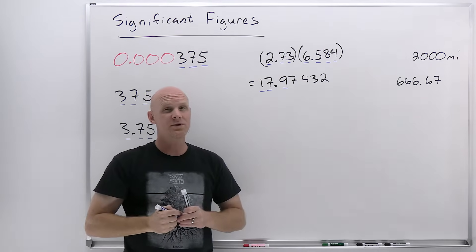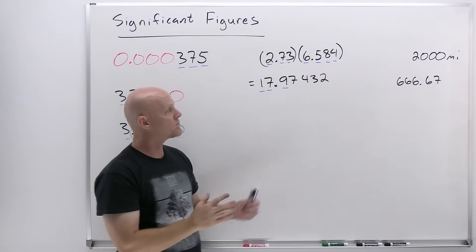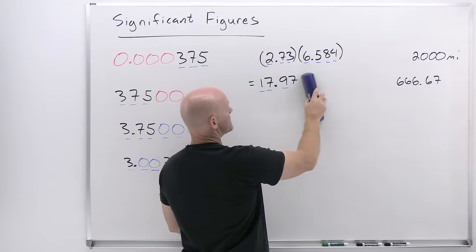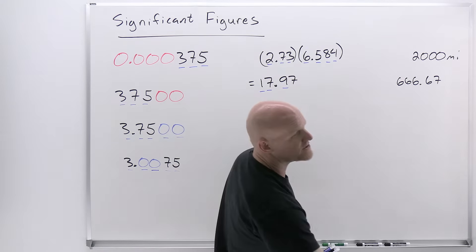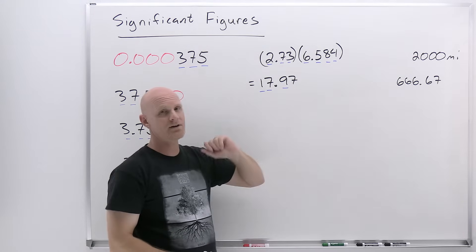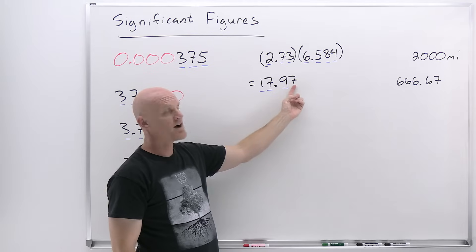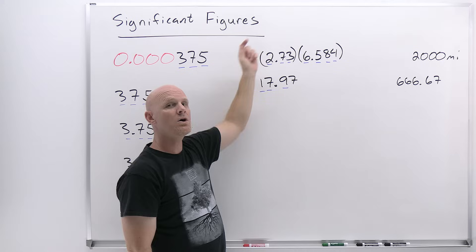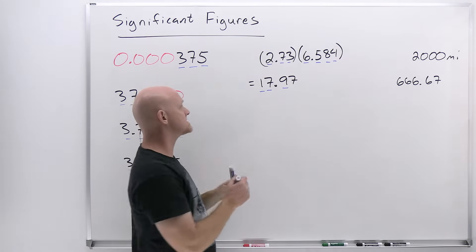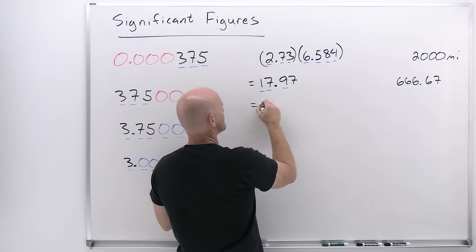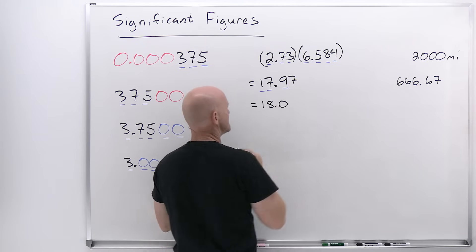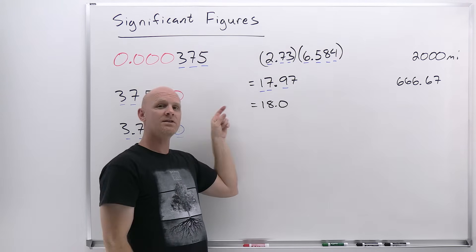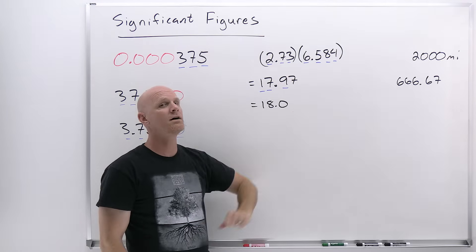Looking back at the original inputs, the first number has three sig figs, the second has four sig figs. Therefore we can only know the answer to three sig figs — the lower of the two. We round to three sig figs: since the next digit is a 7, the 9 rounds up to 0 and carries the 1, making the 7 into an 8. So the answer rounds to 18.0 in three sig figs. That zero is significant because it ends a number to the right of the decimal.